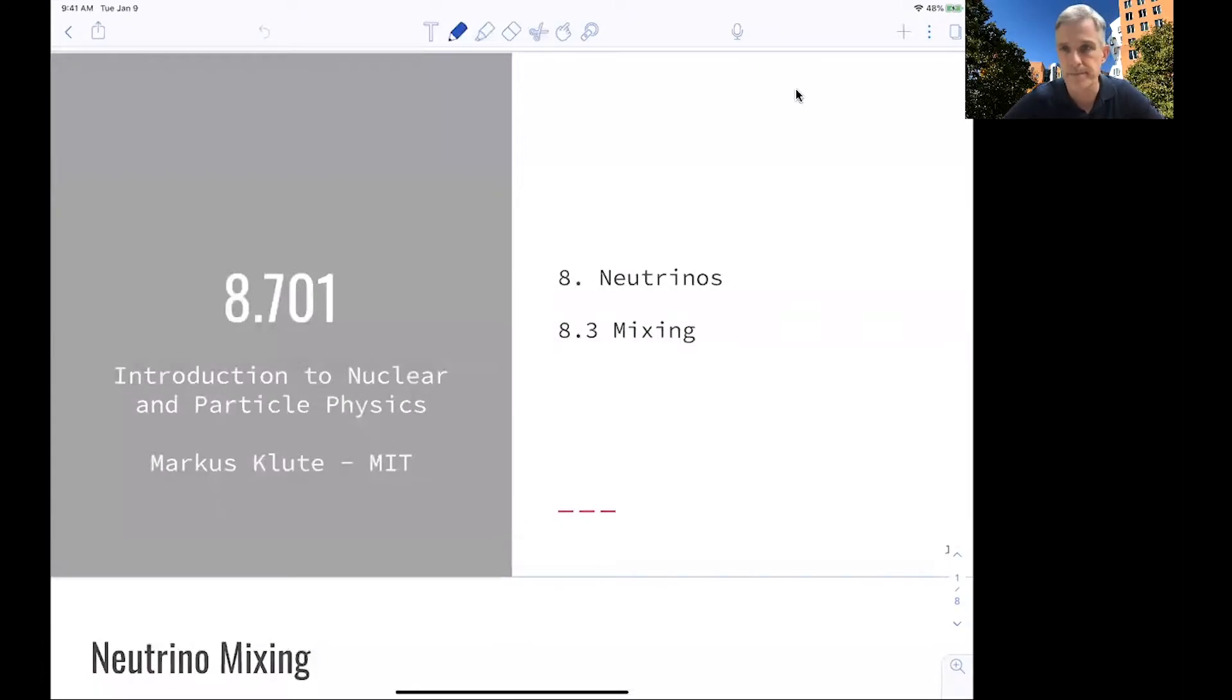Welcome back to 8.701. We have seen in the previous video how neutrinos can acquire mass. When they have mass, their weak eigenstate is not equal to their mass eigenstate. So we observe the same mixing as we have seen in the quark sector. Let's review this a little bit.